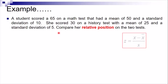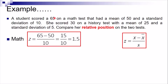Let's identify the formula for the z-score and compare the z-score in math and in history. For math, her score is 65, the mean is 50, and the standard deviation is 10. So we have 65 minus 50 divided by 10, which is 15 divided by 10, giving us a z-score of 1.5 in mathematics.